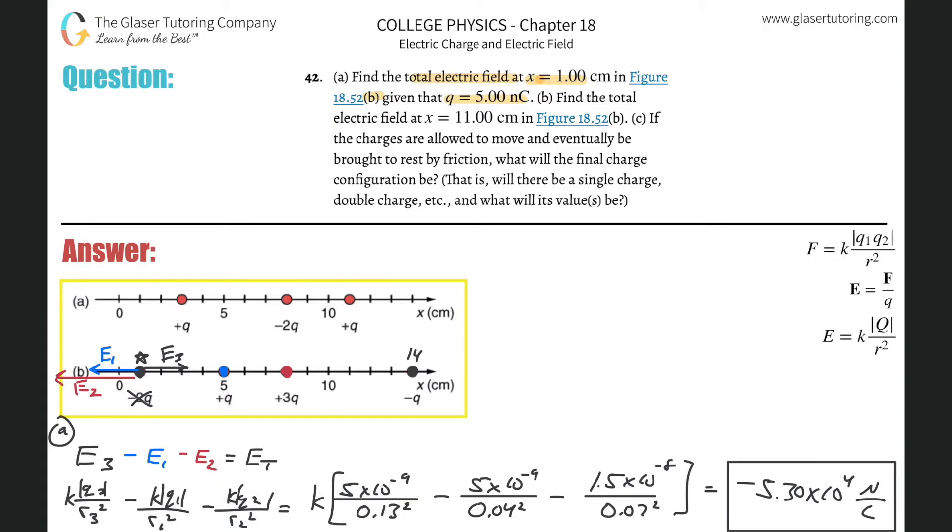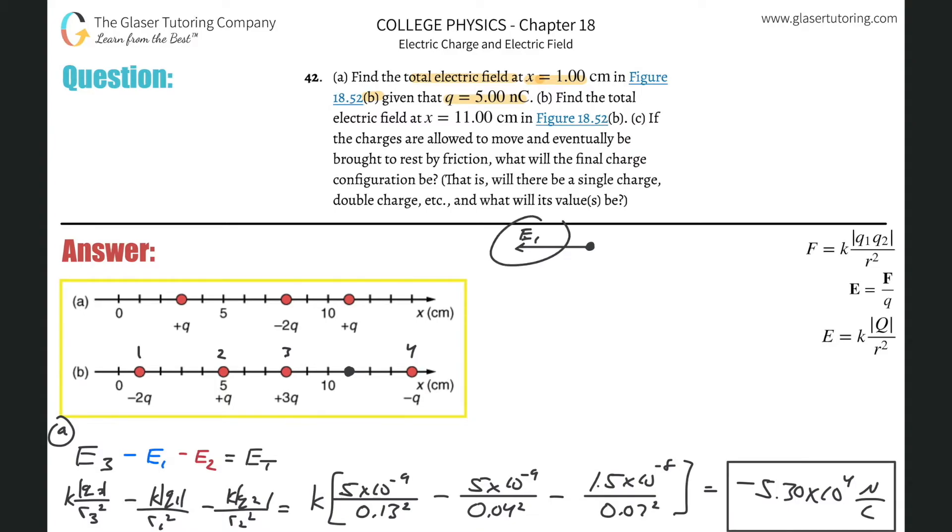Now what do we got to do? Find the total at x equals 11 now. Great. Let's do it again. Now you can't cancel anything though, because everything has a distance relative to this particular point. So let's call this 1, 2, 3, and 4. Now the E1 up here is obviously not the same as the E1 on the bottom. Just keep that in mind.